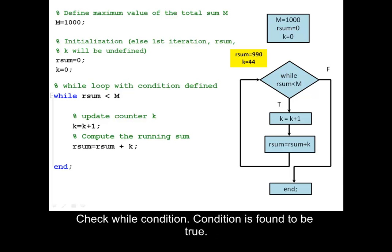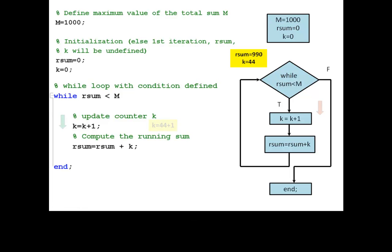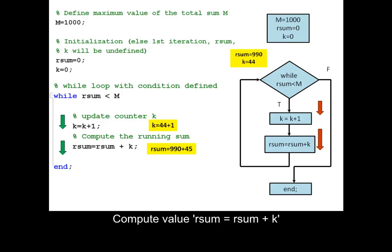Check the while condition — condition is found to be true. Update counter k. Compute value: rsum equals rsum plus k. Return to the beginning of the loop.